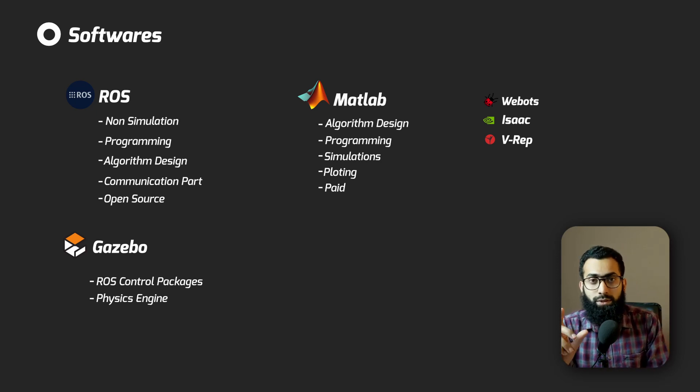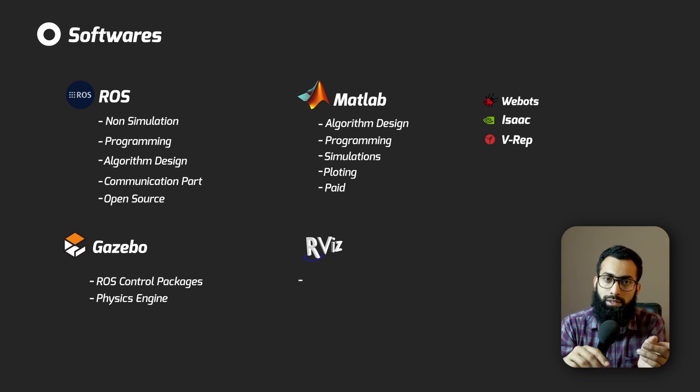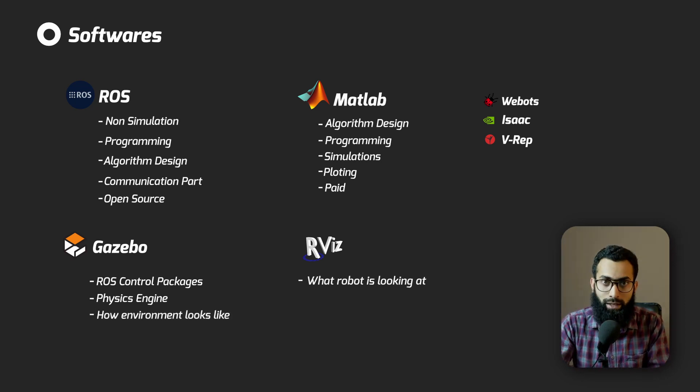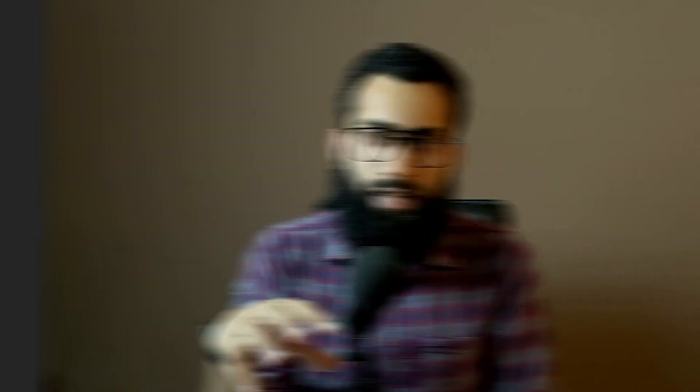Another difference you need to understand is between Gazebo and RViz. RViz is what the robot is looking at — its sensor data and perception. Gazebo is what the environment looks like.